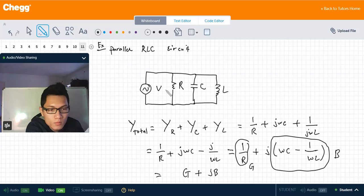So that's how you find the admittance of a particular parallel circuit. Thanks for watching.